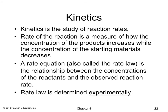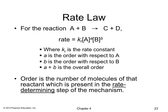Kinetics is the study of reaction rates. The rate of a reaction measures how the concentration of products increases while the concentration of starting material decreases. A rate equation, or rate law, describes the relationship between reactant concentrations and the observed reaction rate, and is always determined experimentally. For a reaction A + B → C + D, the rate = Kr[A]^a[B]^b, where the overall order is a + b — the number of molecules of that reactant present in the rate-determining step.